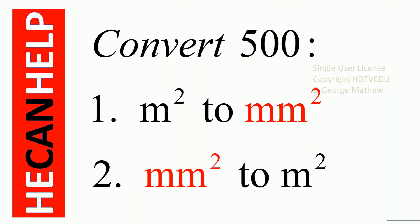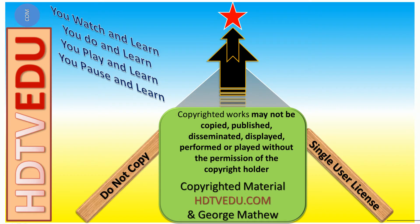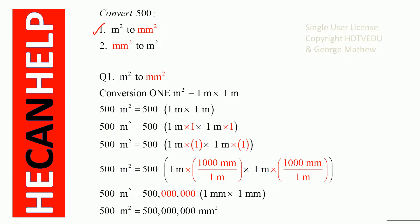We will convert 500 meter squared to millimeter squared, and then convert 500 millimeter squared to meter squared. So, 500 meter squared is equal to...